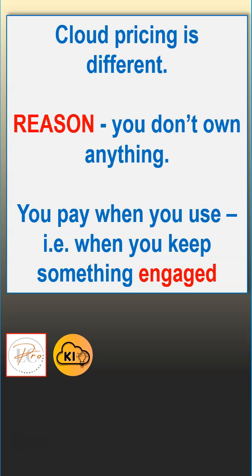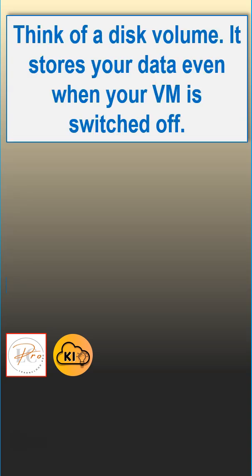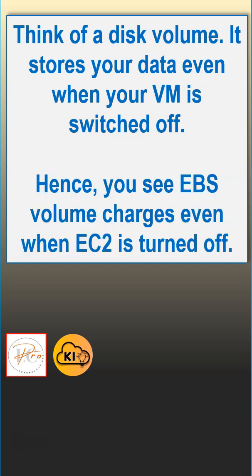What does that really mean? In very simple terms, if you keep a resource engaged, you are paying for it. Think of a disk volume — a disk which is attached to your VM. That disk stores your data even when your VM is switched off. That's why you see EBS volume charges even when your EC2 instance is actually turned off.